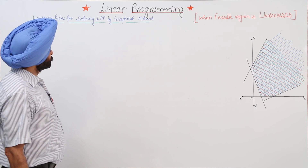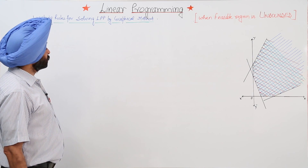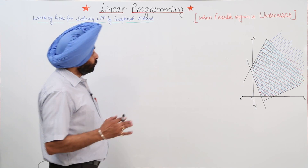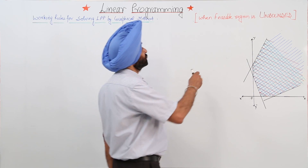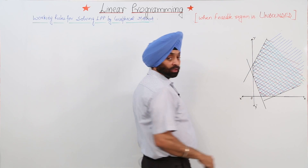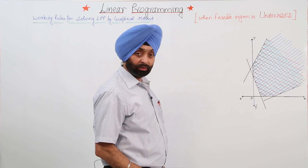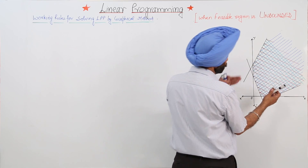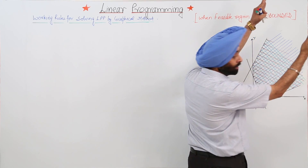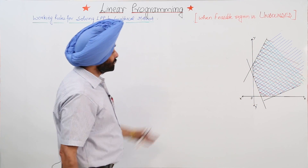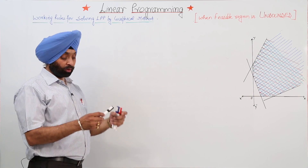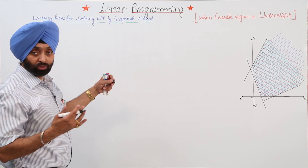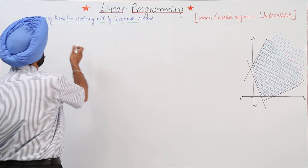Working rules for solving a linear programming problem by graphical method when the feasible region is unbounded. I have drawn a figure here. A graph represents an unbounded area — it is going like this to the infinite point. This type of region is called an unbounded area. Now, let us discuss what new things you are going to face.